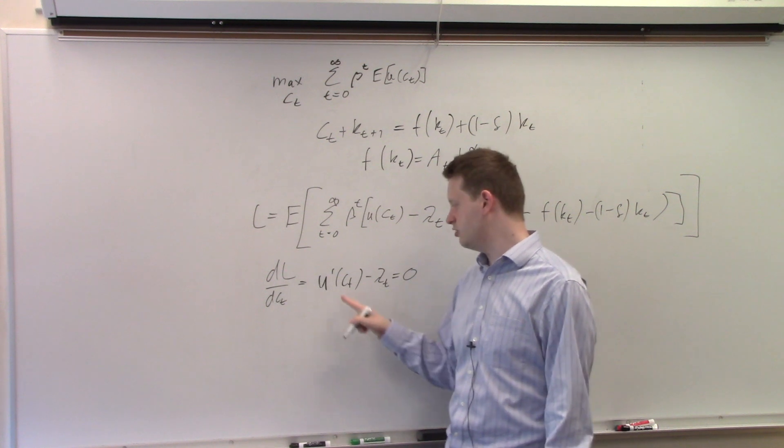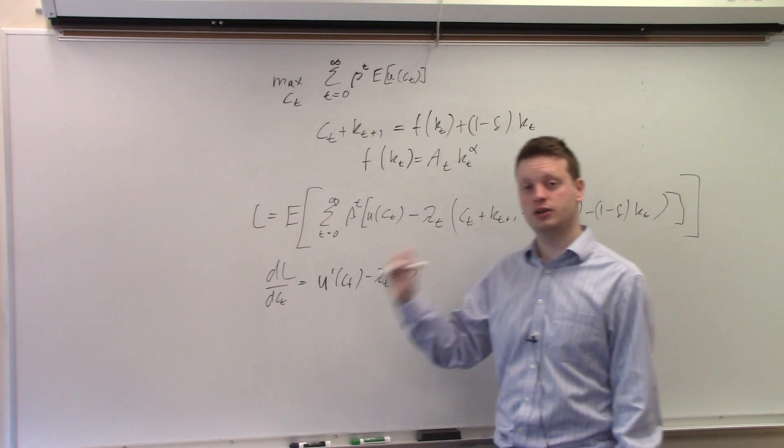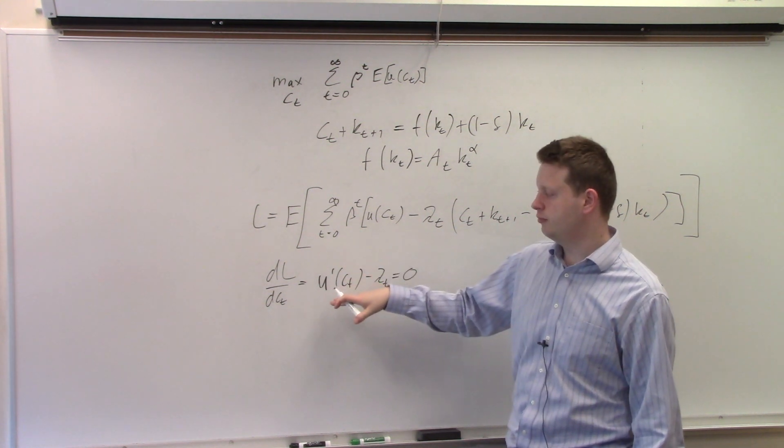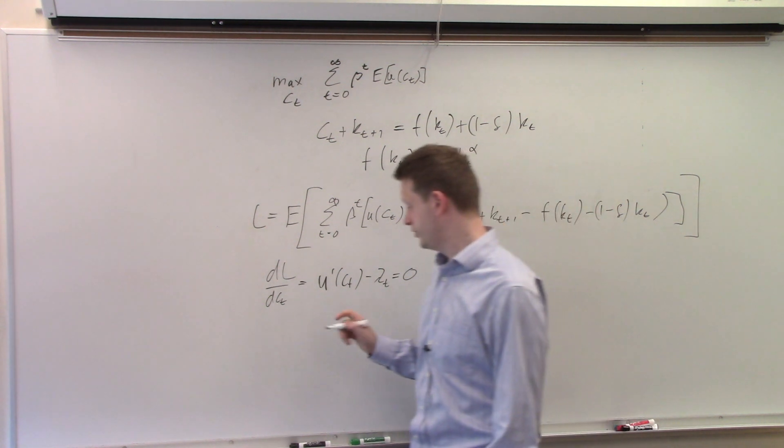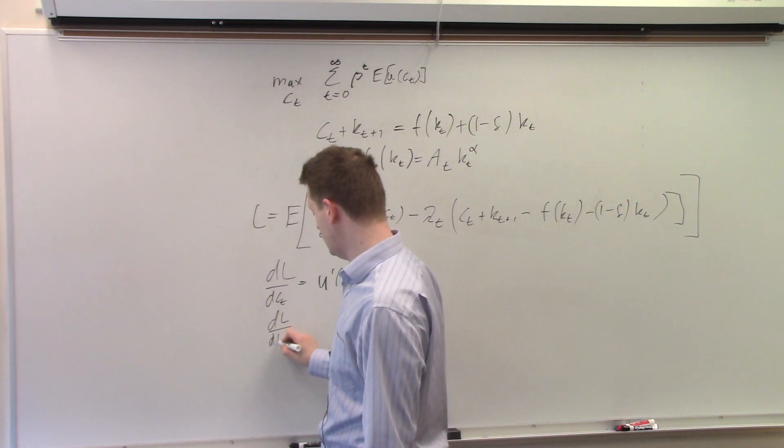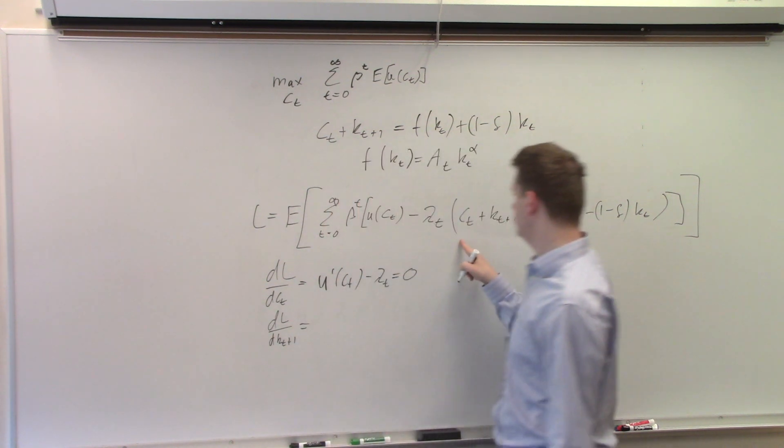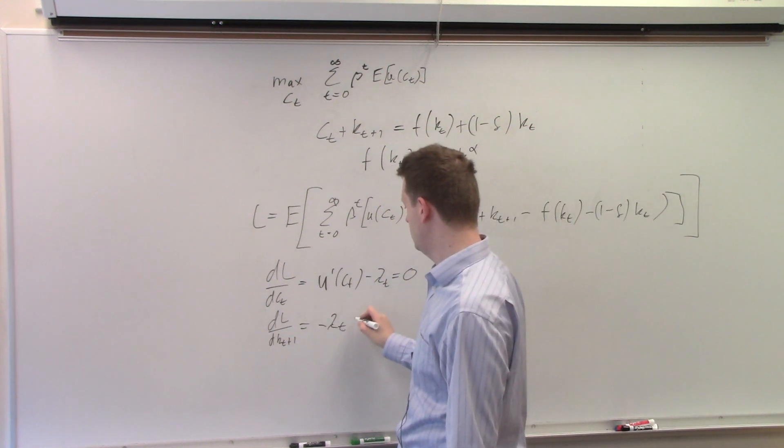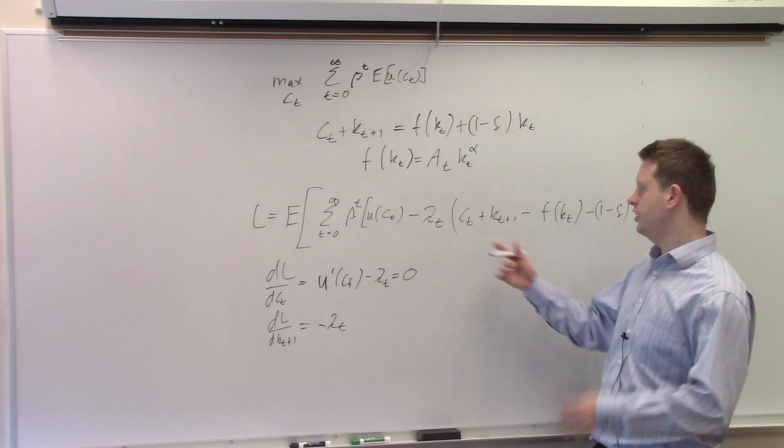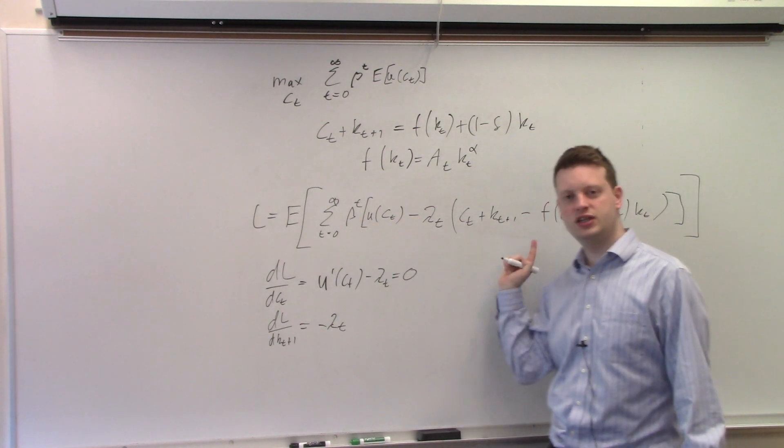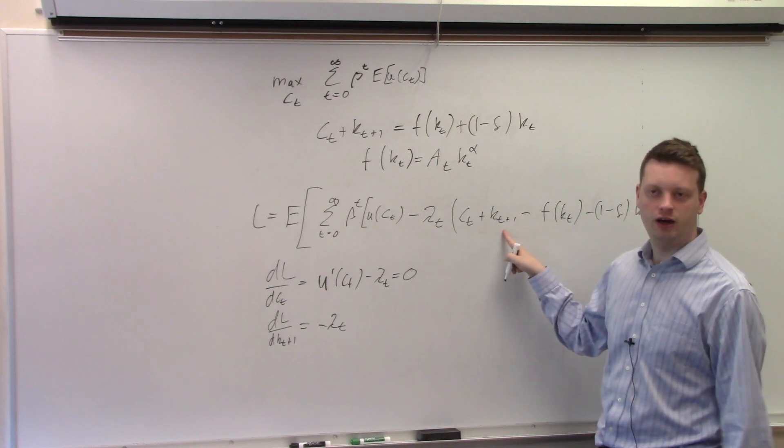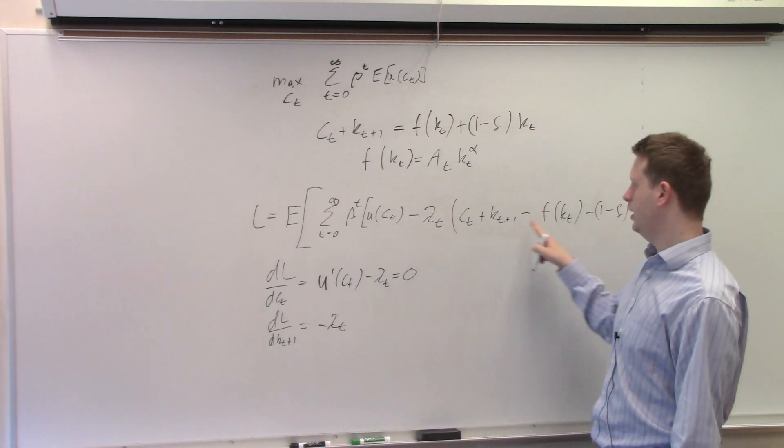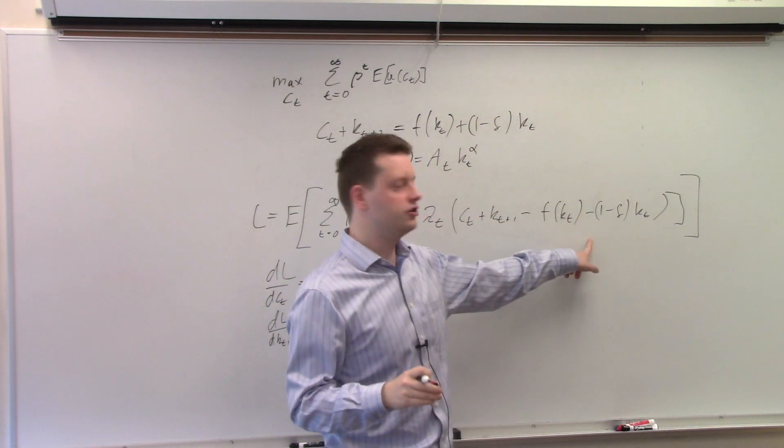If we have elements of period t and t+1, we need to put expectations around all elements for period t+1. And we will see that when we take the derivative with respect to k_{t+1}. Let's do that. dL/dk_{t+1} is equal to, okay, we start here. Minus lambda_t. And now we need to iterate everything forward. So we get, everywhere there was t, we get t+1. Here we have now t+2. And since there's a negative sign here and the two terms here with a k_t are also negative, we can have all positive signs.